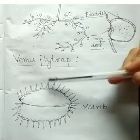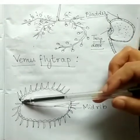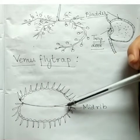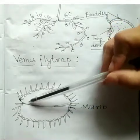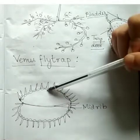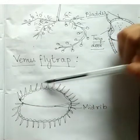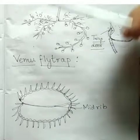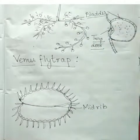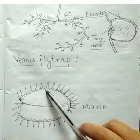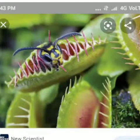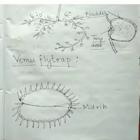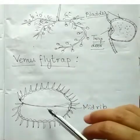The Venus flytrap has a modified leaf where the mid-rib acts as a hinge of a door, allowing the leaf blade to open and close. The leaf has long hairs. When an insect touches the leaf, the edges of the leaf suddenly interlock and close, preventing the escape of the insect. The plant then secretes digestive juices and enzymes to digest the insect.